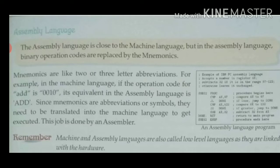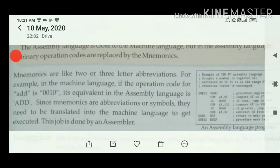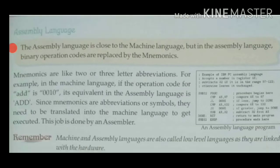We can call it a small name — like if you have to do addition, then we will write in assembly language ADD, and if you have to do subtraction, then we will write SUB. Let's understand with the help of an example: suppose in machine language the operation code for ADD is 0010, its equivalent in assembly language is ADD.